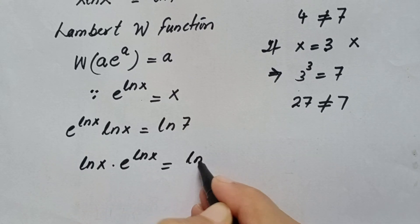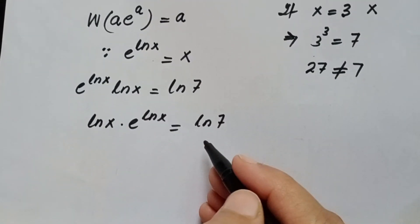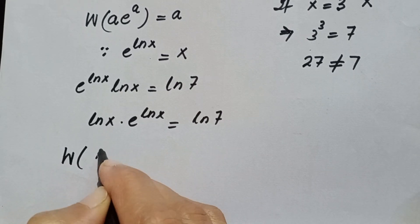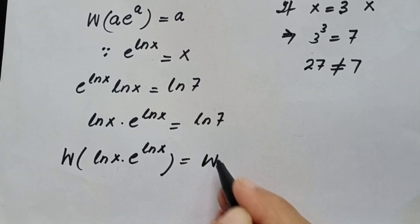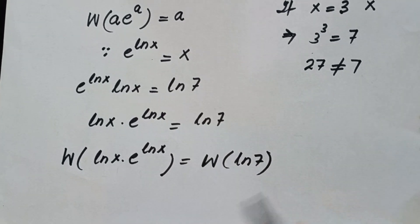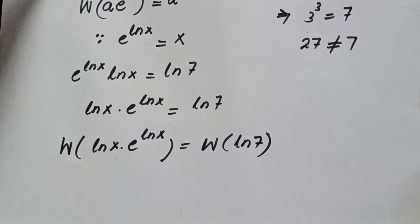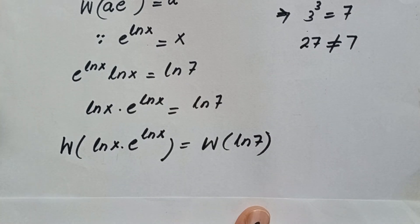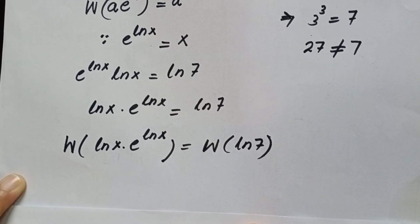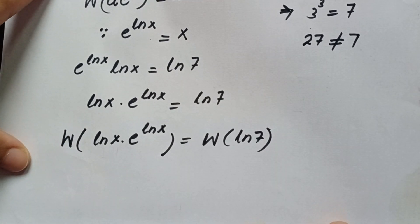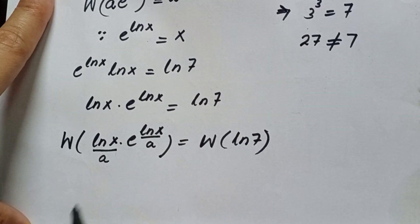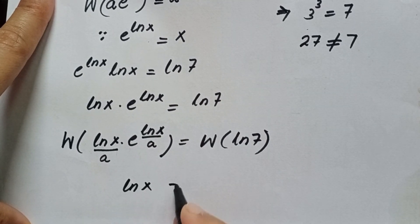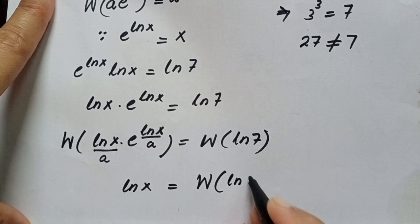We rearrange to get ln(x)·e^(ln x) = ln 7, which matches the Lambert W form a·e^a. Applying the Lambert W function to both sides: W(ln(x)·e^(ln x)) = W(ln 7), so ln x = W(ln 7).